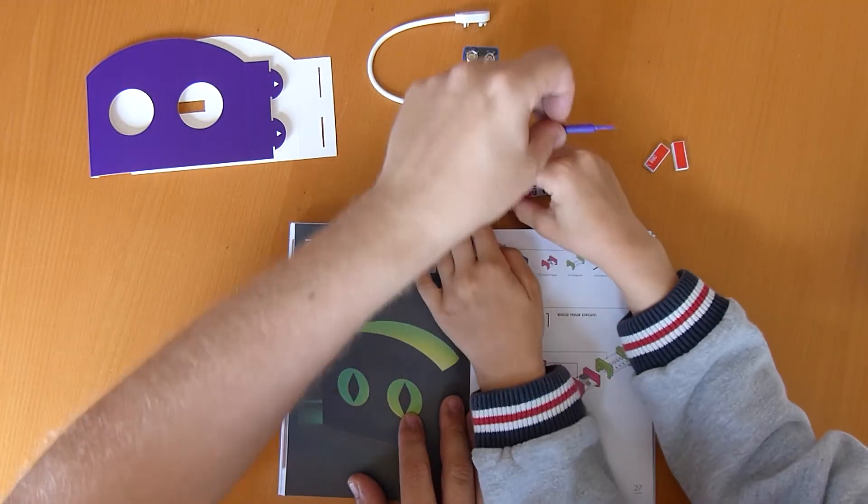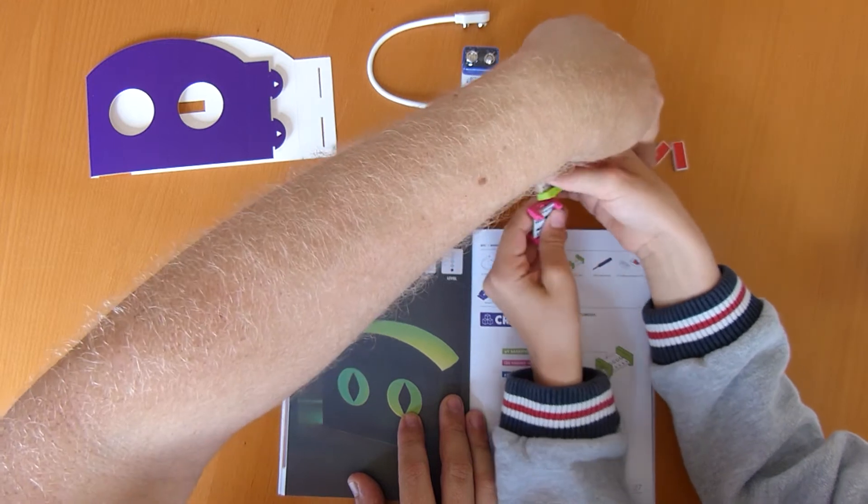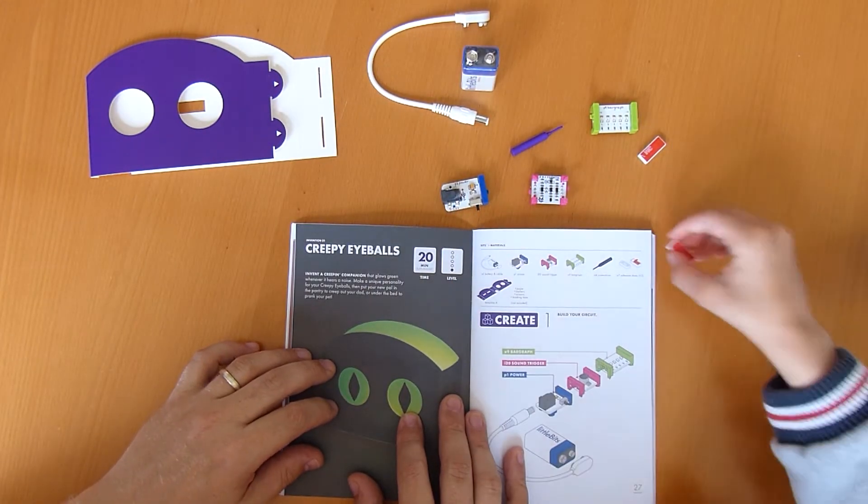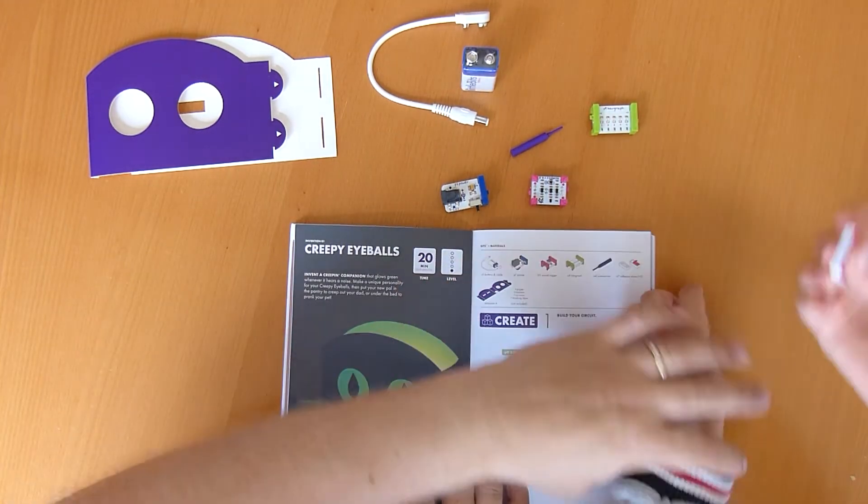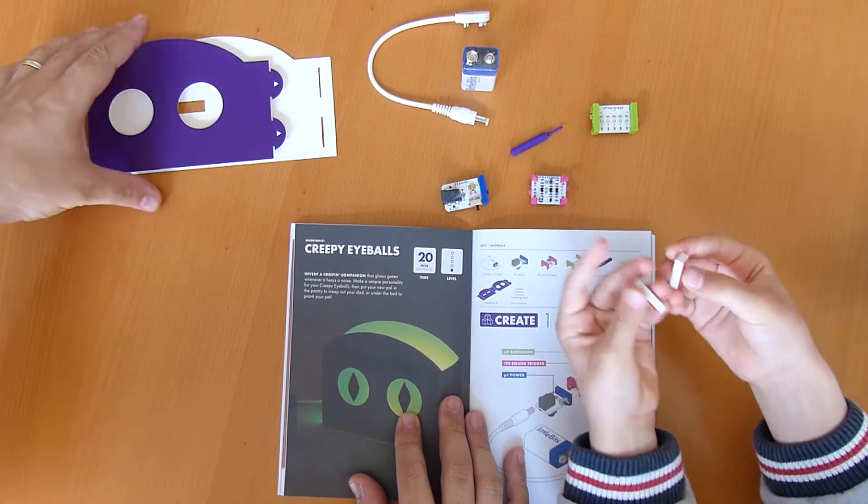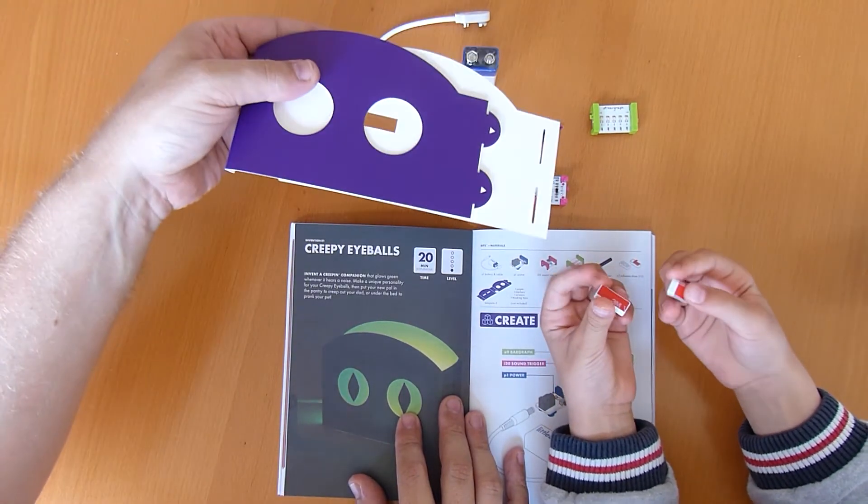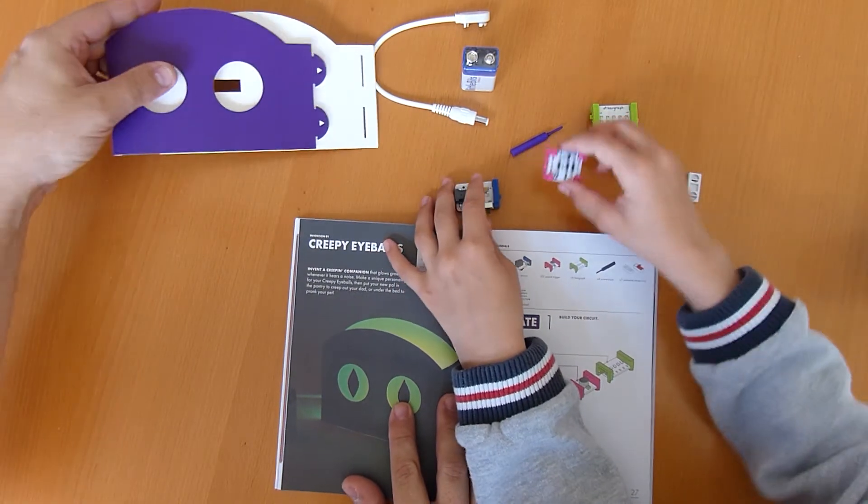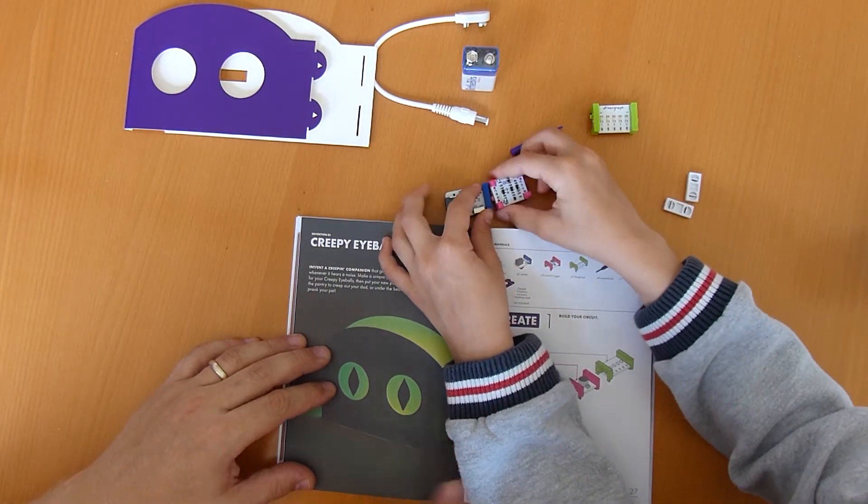We've got a little screwdriver. What are these things here? Adhesive shoes. They're stickers. They've got stickers on the back that stick with things. And then we've got this kind of template thing. I'm guessing we're going to have to make our own little bits. So let's have a go.